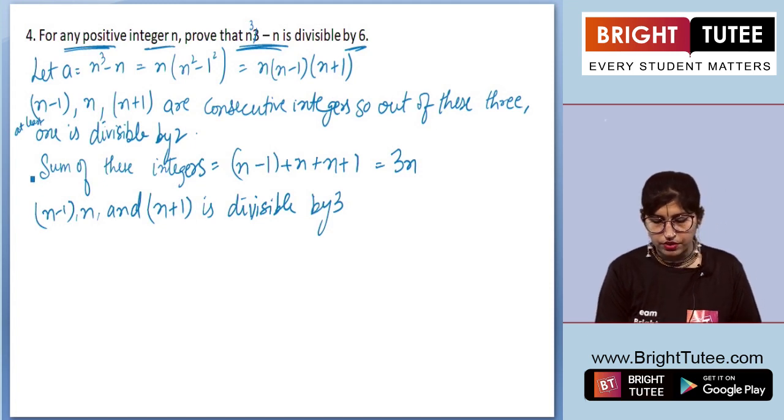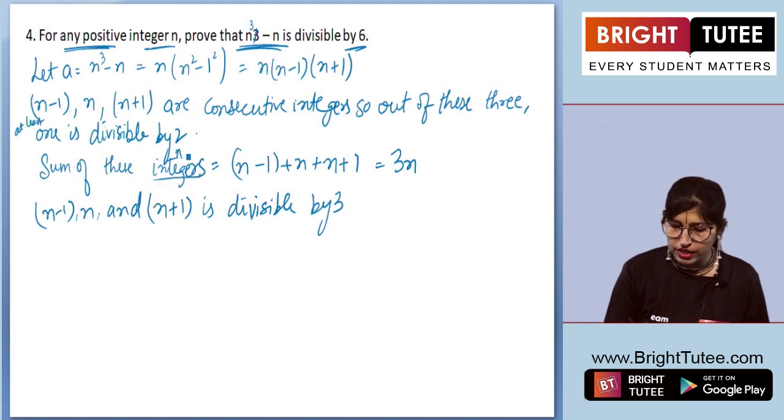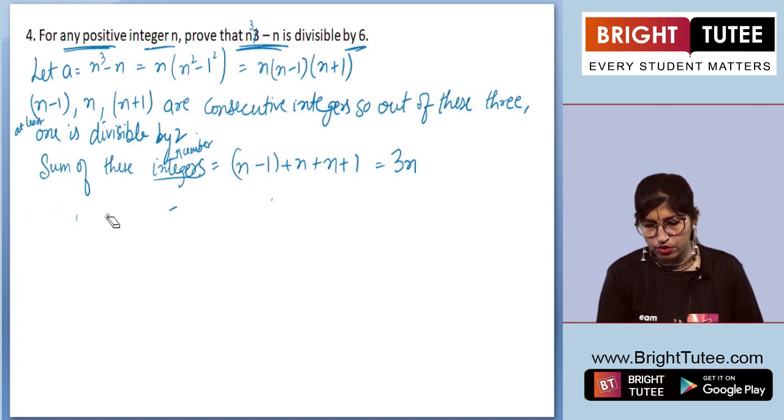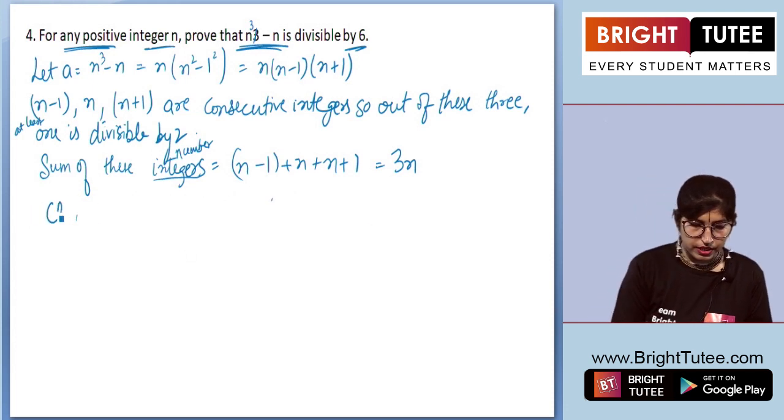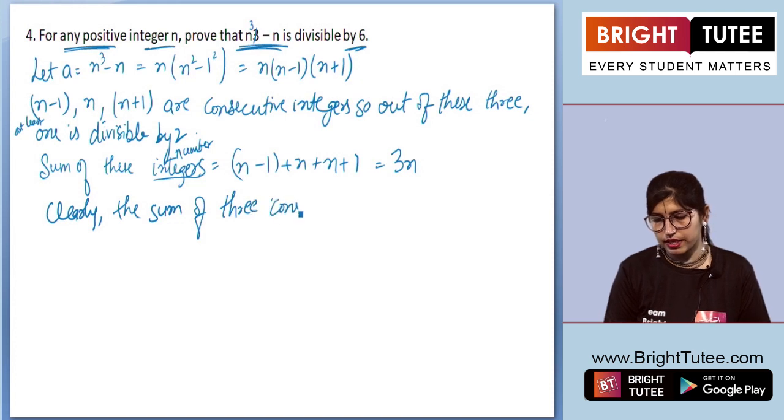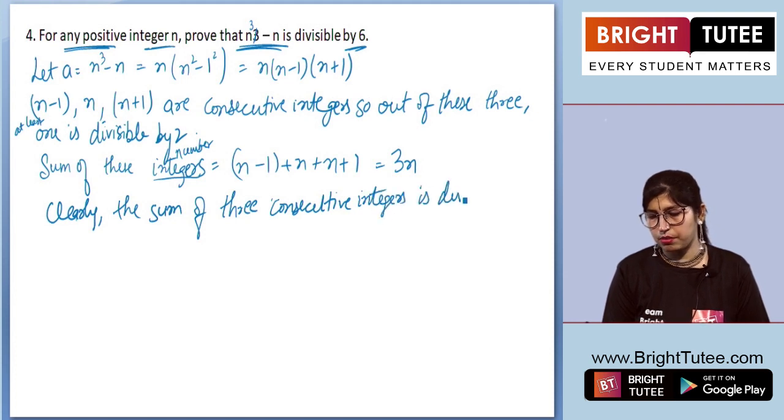So ultimately, the sum of these numbers is 3n. Clearly we can see that the sum of 3 consecutive integers is divisible by 3.